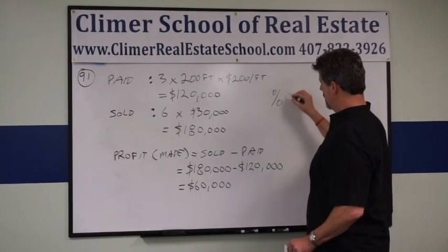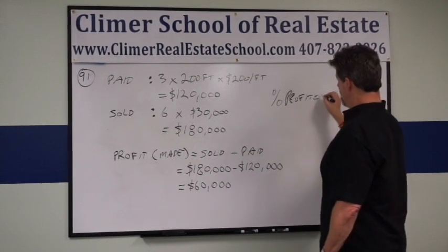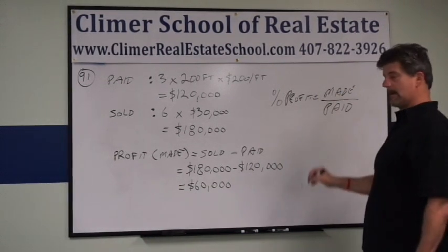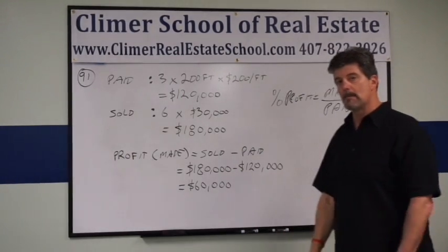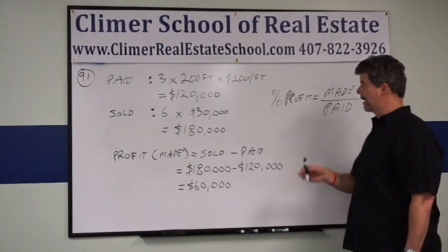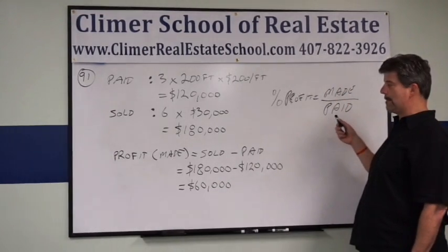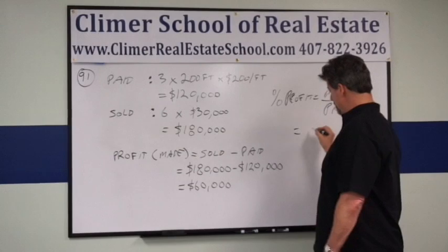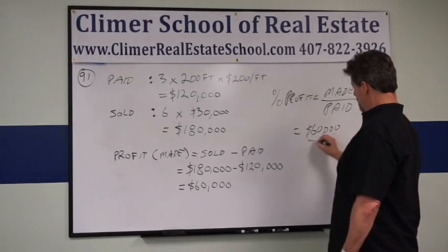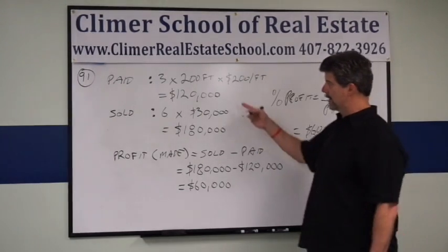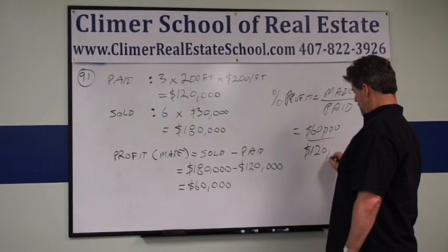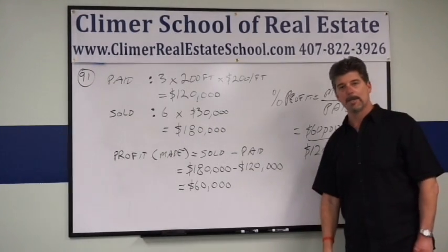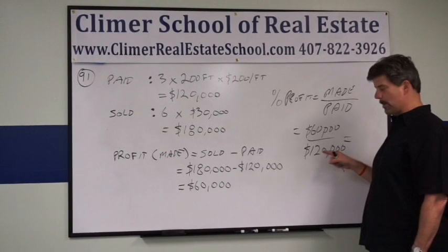Remember it this way: percentage profit is made over paid — made over paid. Remember how you work a fraction on a calculator: top number divide bottom number equals. How much did she make? $60,000. How much did she pay? $120,000.